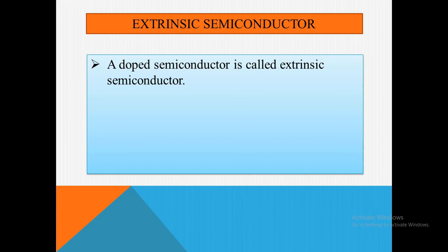Extrinsic semiconductor means when a small quantity of impurity is mixed in a pure or intrinsic semiconductor, the conductivity of the semiconductor increases. That means nearly 1 atom of impurity in 10 to the power 7 atoms of pure semiconductor is added. Such an impurity semiconductor is called an extrinsic semiconductor. The conductivity of the resultant crystal depends on the nature and quantity of the impurity added.